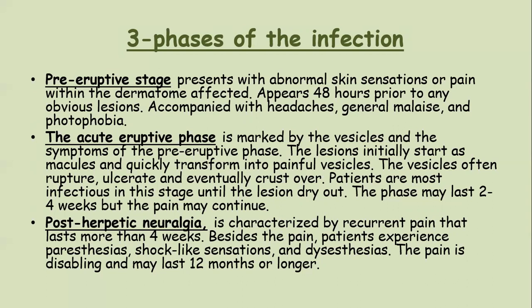The acute eruptive phase is marked by vesicles. Lesions start as macules and quickly transform into vesicles, which often rupture, ulcerate and eventually crust. Patients are most infectious in this stage until the lesions dry out. This phase lasts for two to four weeks. Unlike varicella, all lesions in herpes zoster are at the same stage of healing, as the acute eruptive phase occurs once and not in crops. The third stage is post-herpetic neuralgia, characterized by pain lasting more than four weeks. Besides pain, patients experience paresthesias, shock-like sensations and dysesthesias. The pain is disabling and lasts for 12 months or longer.